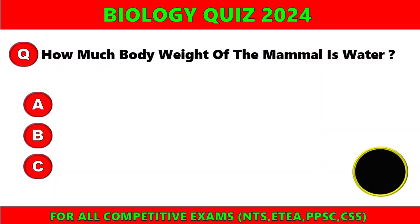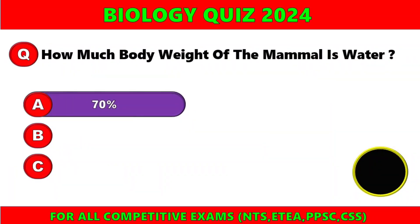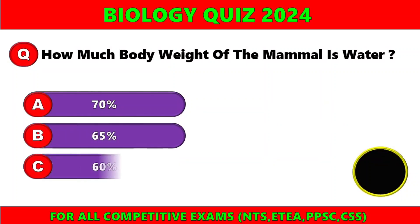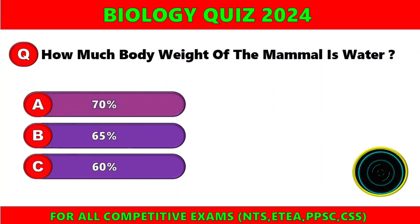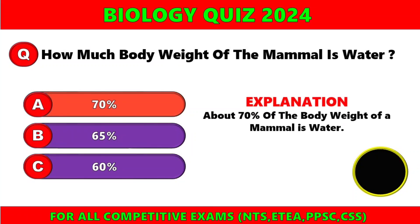How much of body weight of a mammal is water? A) 70 percent, b) 65 percent, c) 60 percent. The right option is A — 70 percent. About 70 percent of the body weight of a mammal is water.